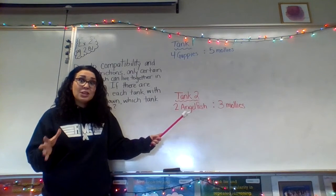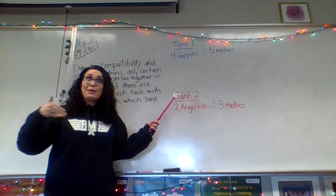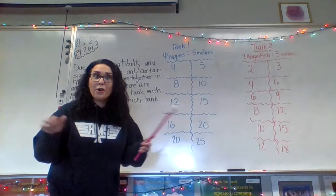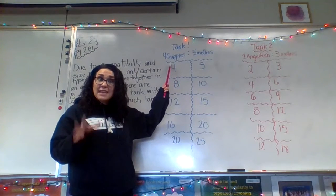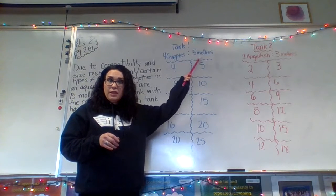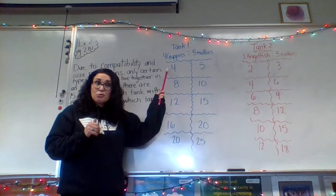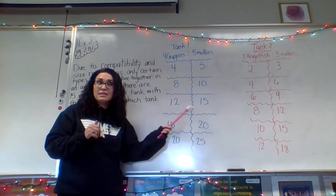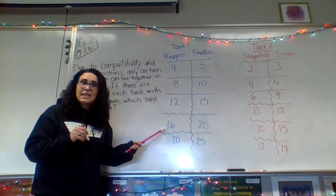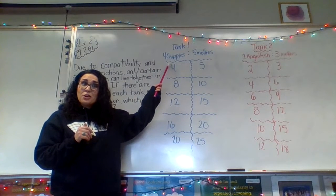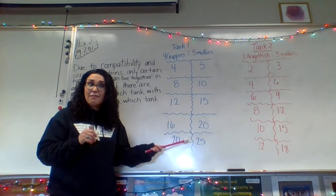We're going to create a table to represent these different amounts, and then create equivalent ratios to compare them. For tank one, the original ratio was four guppies to five mollies. If we double that, we get eight guppies to 10 mollies. Triple it: 12 guppies to 15 mollies. Quadruple it: 16 guppies to 20 mollies. Multiply by five: 20 guppies to 25 mollies. These are all equivalent ratios based off that original ratio.